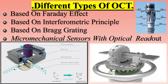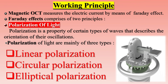OCTs are typically more accurate than conventional current transformers and can be used to measure current in both AC and DC applications. They are also smaller and lighter than traditional current transformers, making them easier to install and handle. They are often used in power systems to measure the currents flowing through high-voltage transmission lines.